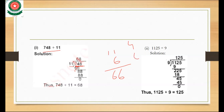We subtract 74 minus 66. We can't subtract 4 with 6, so we take a carry. The 7 becomes 6. So 14 minus 6 is 8, and 6 minus 6 is 0. The 0 on the left has no value.